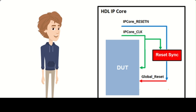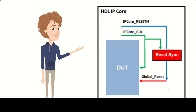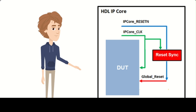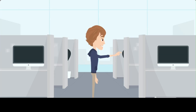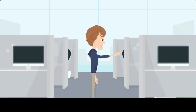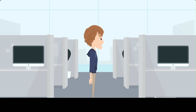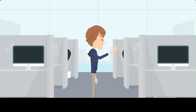Third is the reset signal, which is used to reset the system to its initial state. When the reset signal is sent, all components of the system are initialized and their states are reset. Fourth is the memory enable signal, which is used to enable or disable access to memory. When the memory enable signal is sent, the memory module is enabled or disabled accordingly.